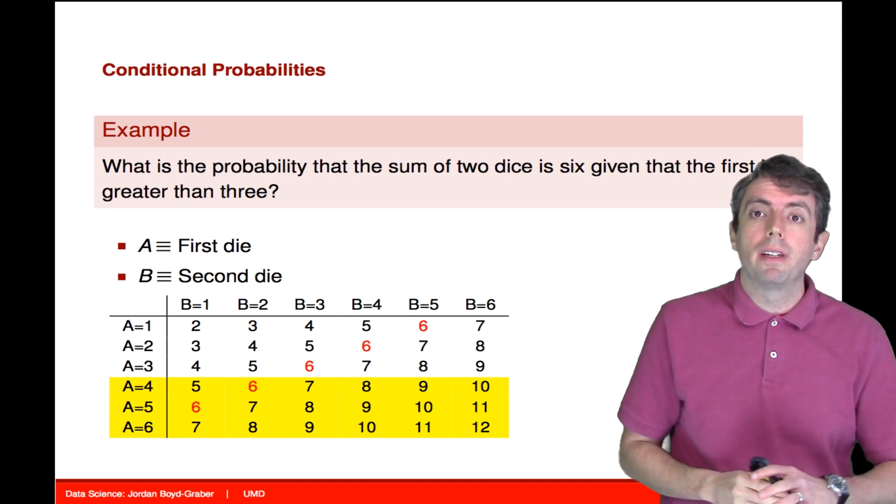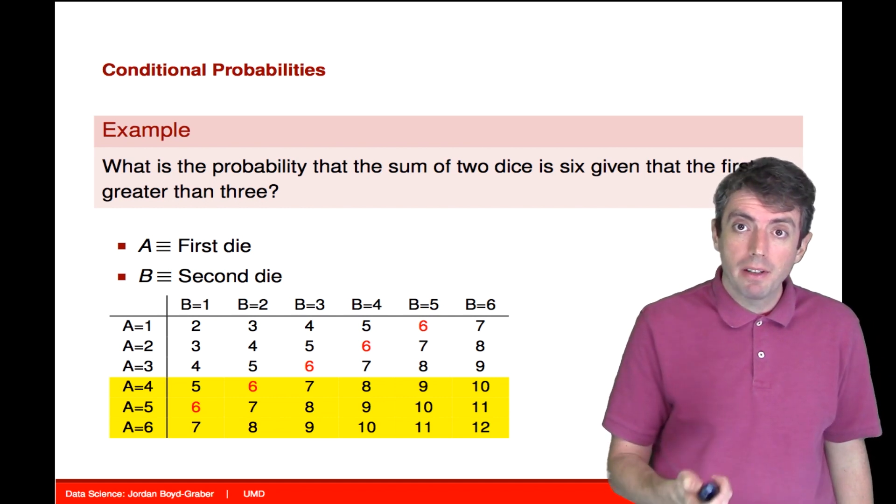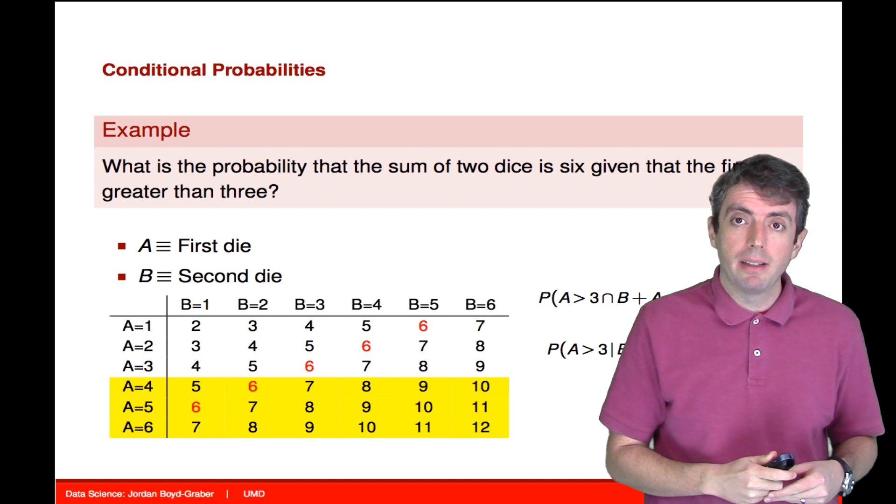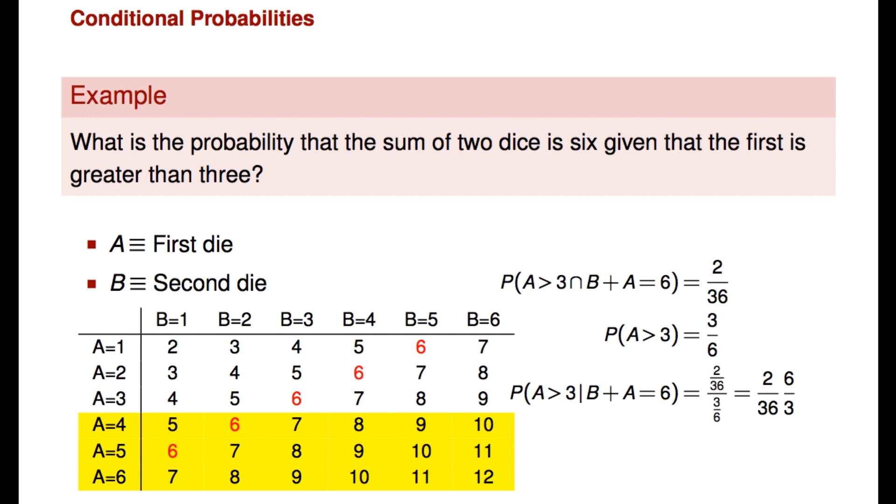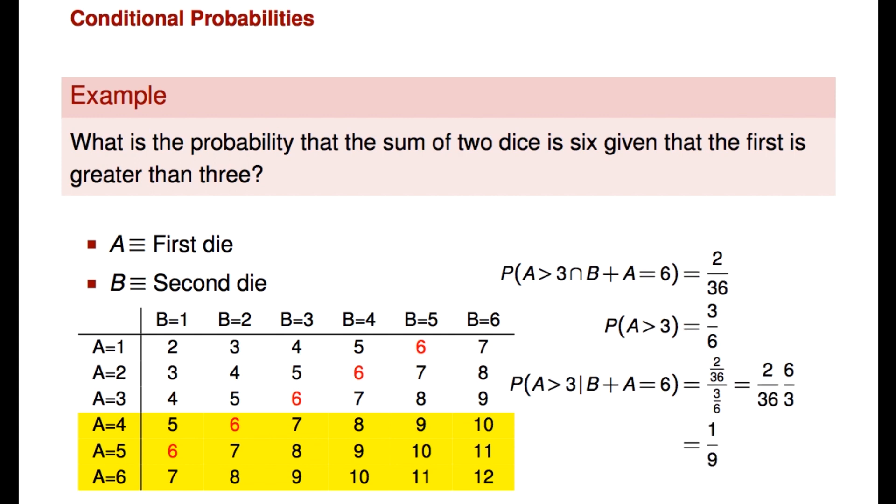So now let's work through this rigorously. Alright, so first, let's take a look at the individual probabilities that we need to compute. We need to compute the probability of A being greater than three intersected with the probability that A plus B is equal to six. There are only two ways that that could happen, two out of 36. We also need to ask, what is the probability of A being greater than three? That is equal to one-half, since there are three outcomes out of six. And then we use the law of conditional probability to put them together, dividing one by the other. And so that gives us one-ninth.